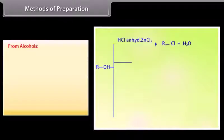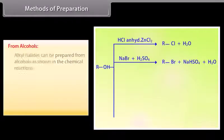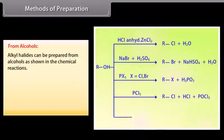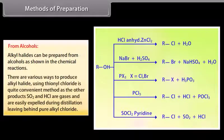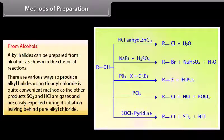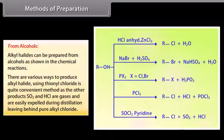Alkyl halides can be prepared from alcohols, as shown in the chemical reactions. There are various ways to produce alkyl halides; using thionyl chloride is quite a convenient method, as the other products SO2 and HCl are gases and are easily expelled during distillation, leaving behind pure alkyl halide.